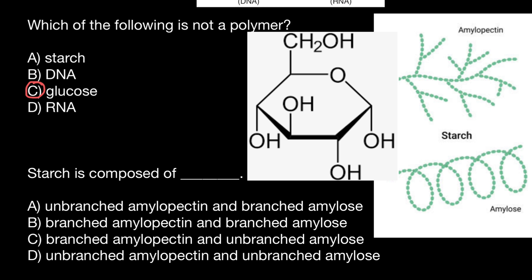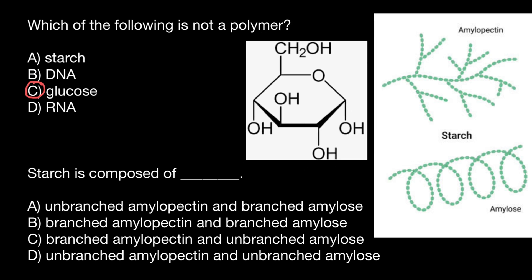Now we can move to the next question: starch is composed of — and again we have to choose the correct answer. Starch we can find in most green plants; it is used in order to store energy. We can find it especially in tubers and in seeds, for example in rice or in potato.